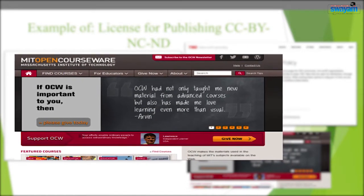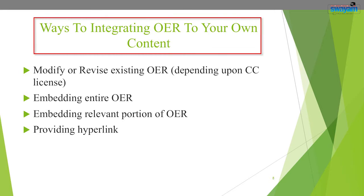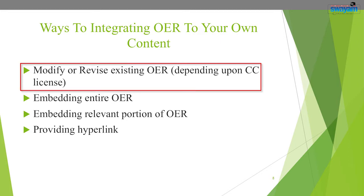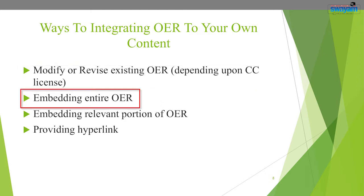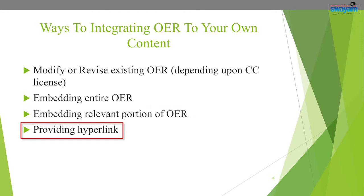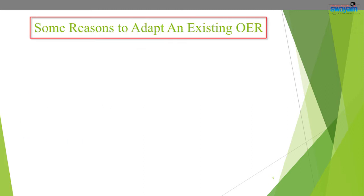Now, having understood various kinds of licenses used by organizations and people, let us look at ways to integrate OER into our own content. There are various ways we can integrate them: we can modify or revise existing OER depending on the CC license, embed the entire OER in our course, embed a relevant portion of OER, or provide a hyperlink to use it.